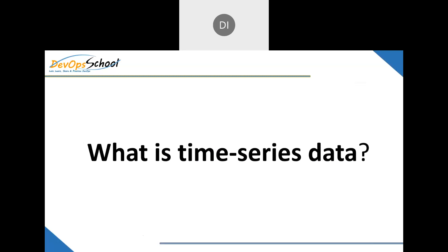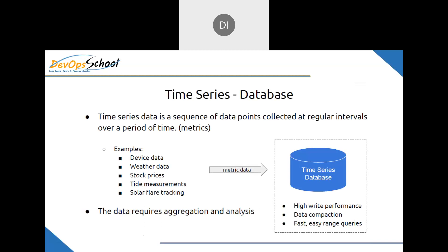Time series data is not about collecting every piece of data generated by distributed endpoints, servers, services, and networks. Instead, we collect data at certain intervals. For example, instead of collecting CPU data every second, we collect it every 15 seconds — that immediately reduces storage by 15x.